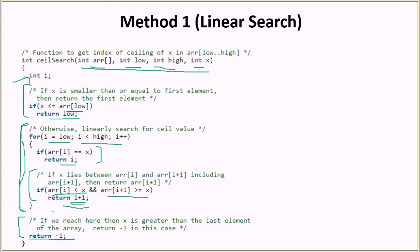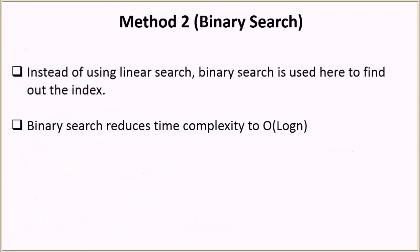That was the first method using linear search. The time complexity is O(n) because we are iterating over the whole array in the worst case. Now let's look at the better solution which is binary search, which will reduce the time complexity to O(log n).